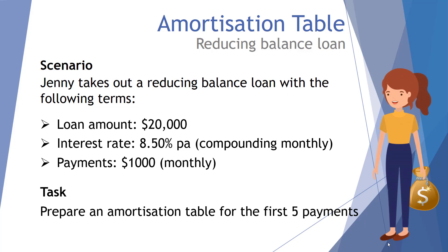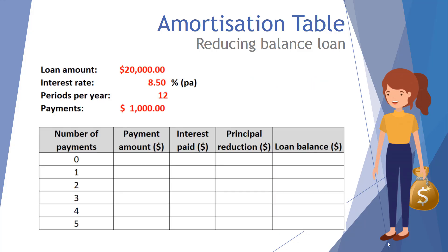This is what an amortization table looks like. We have the first column: the number of payments; second column: the payment amount; third: the interest paid; fourth: the principal reduction; and fifth: the loan balance. We start off with a balance of twenty thousand dollars — this is the loan that she's taken out.